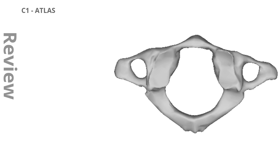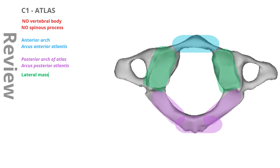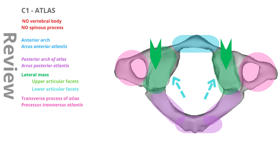Let's review some of what we learned. The first cervical vertebra, also known as the atlas, is a ring-like bone that does not contain a vertebral body or spinous process. The atlas consists of anterior and posterior arches connected by a lateral mass on each side. Each lateral mass bears articular facets on the superior and inferior sides and projects a transverse process on the lateral side. In the center, a ring-like anatomical space called the vertebral canal is formed, which provides a passageway for the spinal cord.